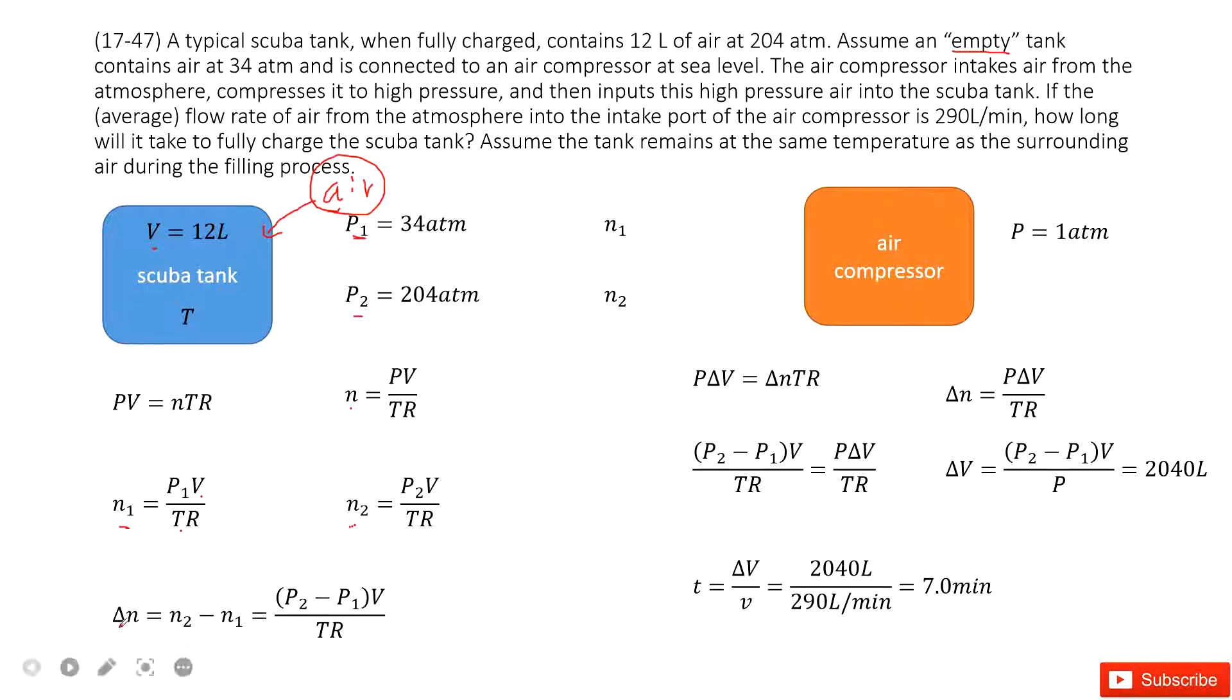And therefore, the air input is the final air minus initial air. n2 minus n1, the molar number. So we get the function like this one. Now this is the air we need to input. The next step, we can find the time.